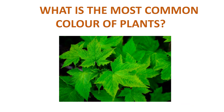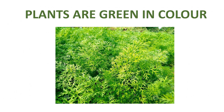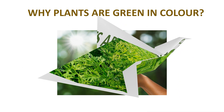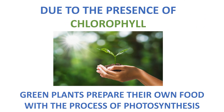What is the most common color of plants? Plants are green in color. Why are plants green in color? Due to the presence of chlorophyll, green plants prepare their own food through the process of photosynthesis.